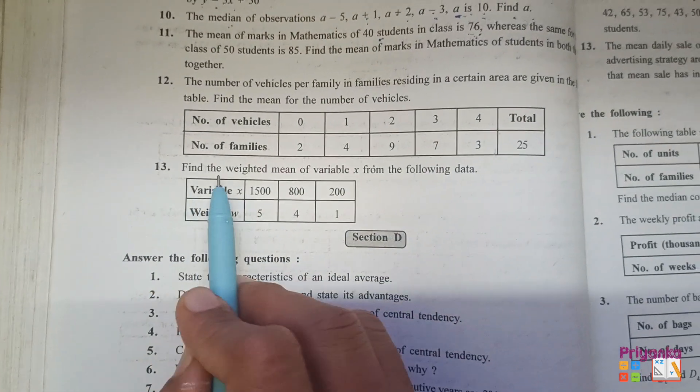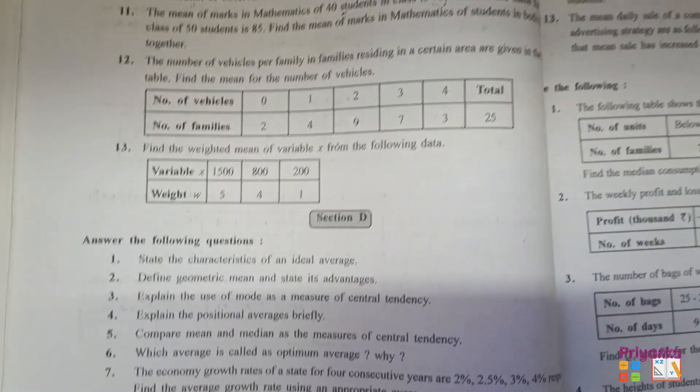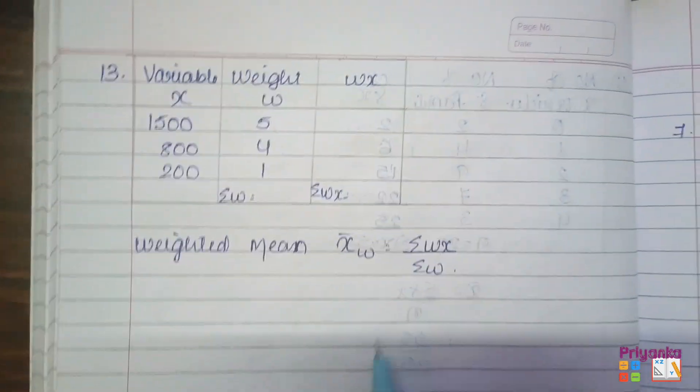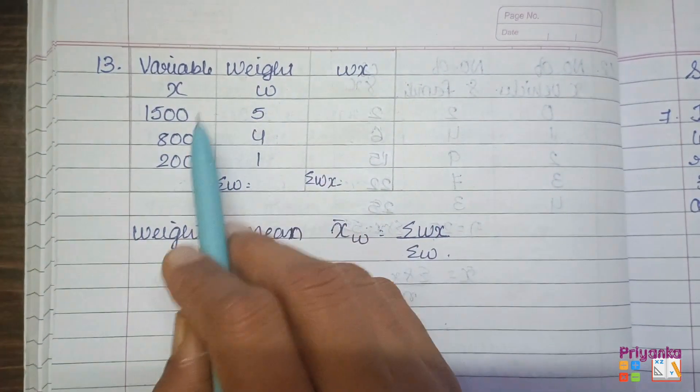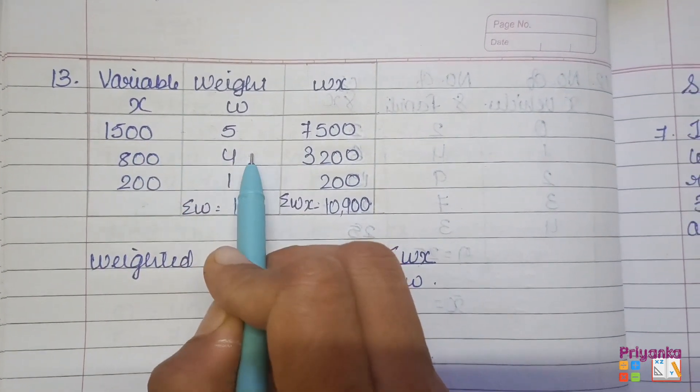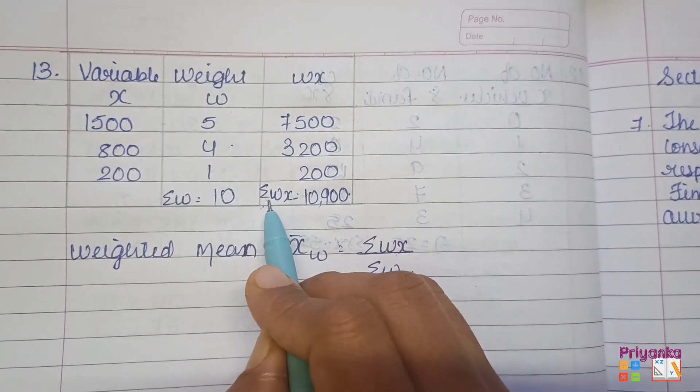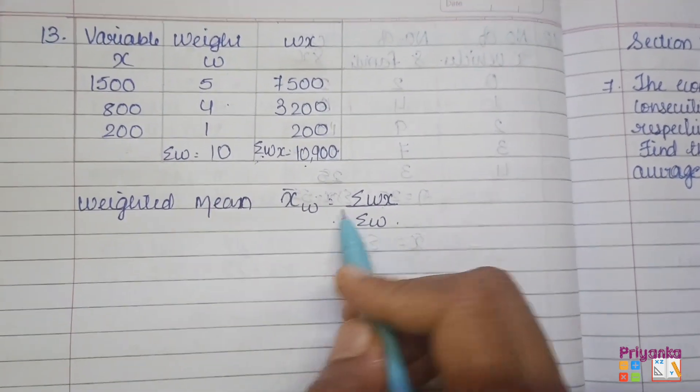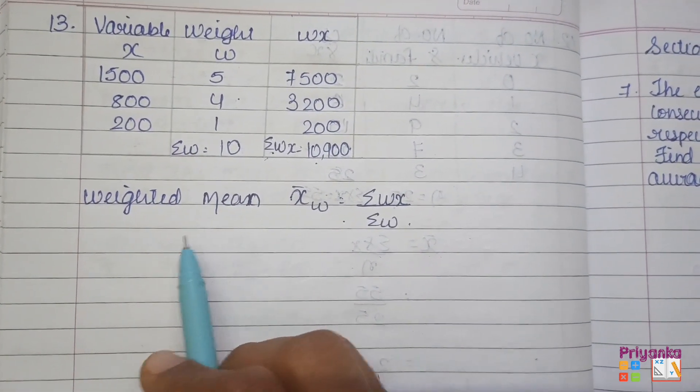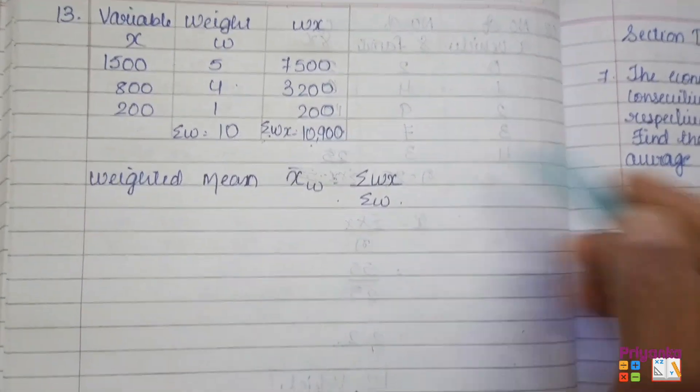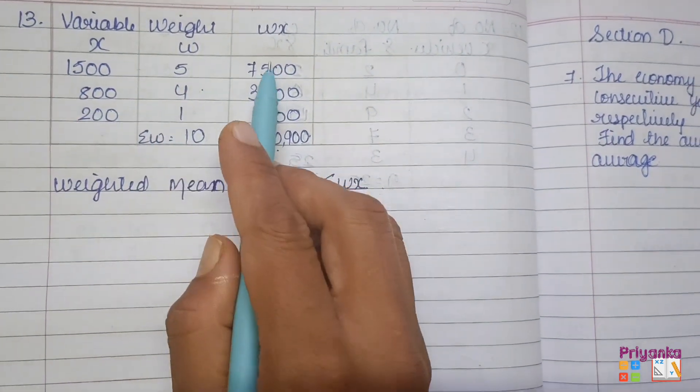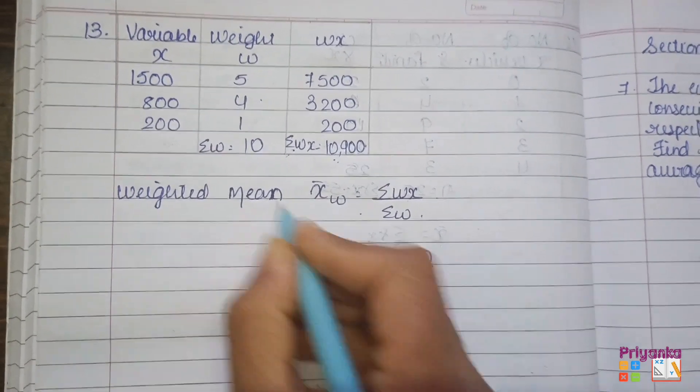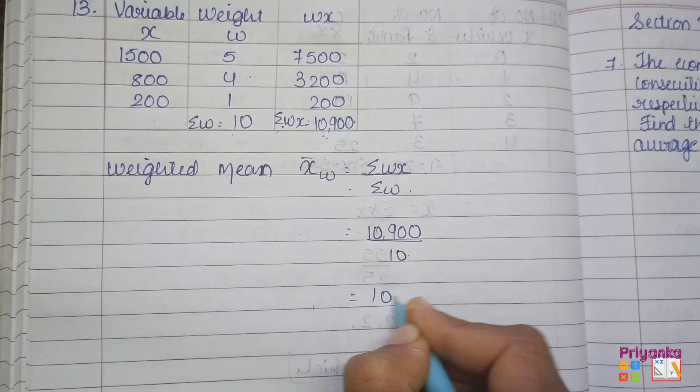Next. Third one, find the weighted mean of variable x from the following data. Here the value of x is given and the weight of it. First take this information in your book. Here I took the information, so first we will make a multiplication of these two numbers. I give the multiplication of x with weight, I found wx. The total of this column will be called sigma wx, that is 10900. Remember the formula of weighted mean. Here you can use both formulas, even you can use the formula described by weight 1 x 1 plus weight 2 x 2 plus weight 3 x 3, that also can go. And even this can be used because here we are already making a multiplication and by adding we will take it directly in the formula. So here we take 10900 and the total of weight is 10, and we got the weighted mean here, 1090.